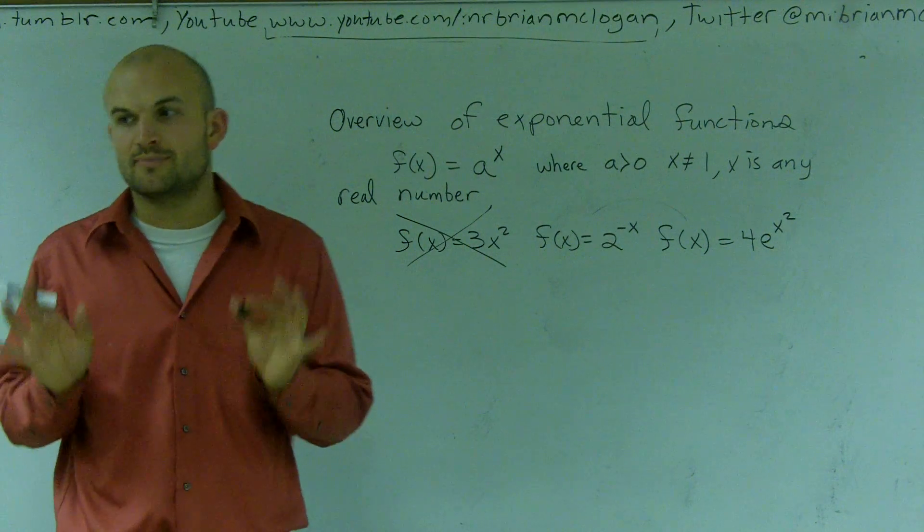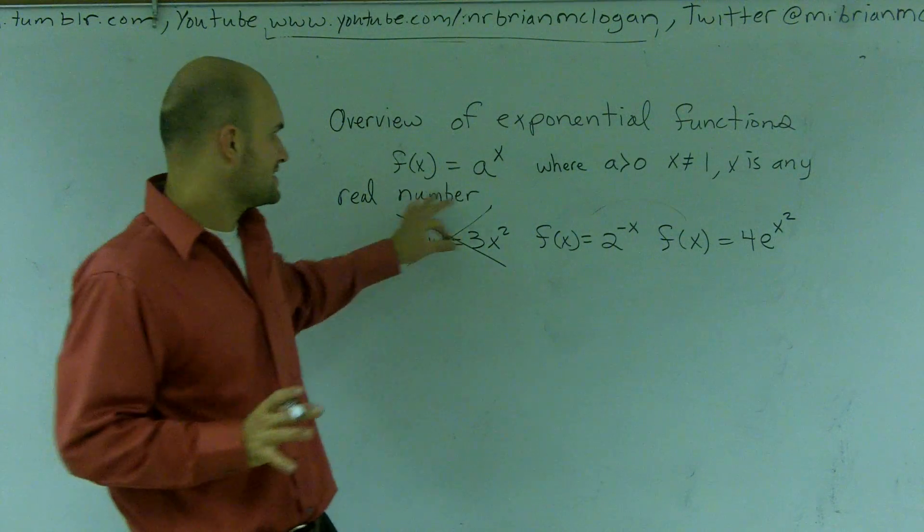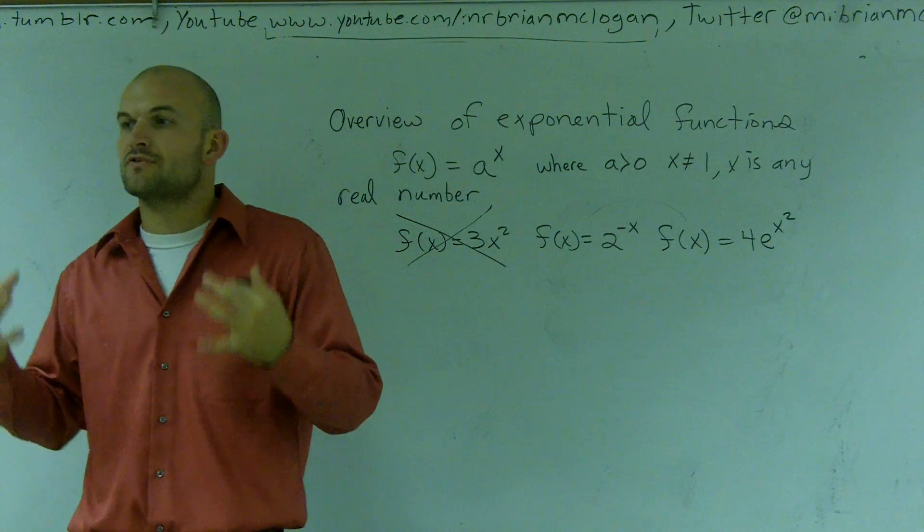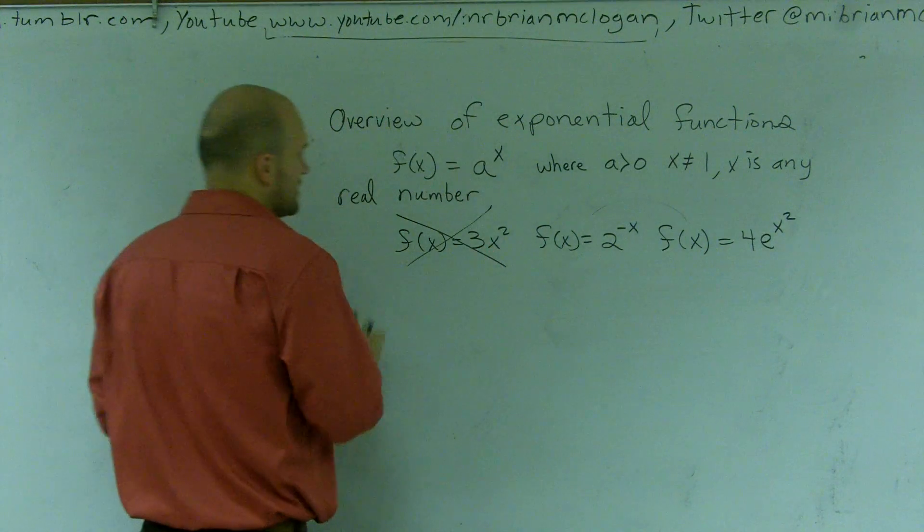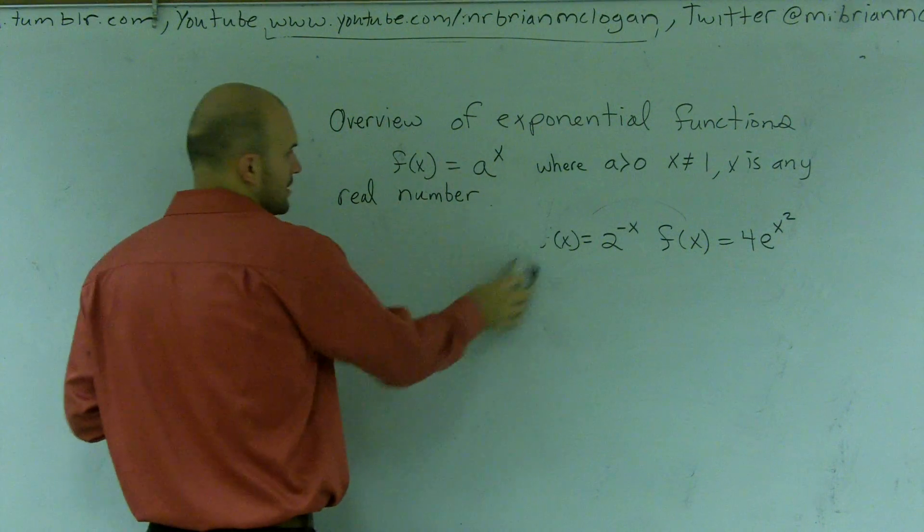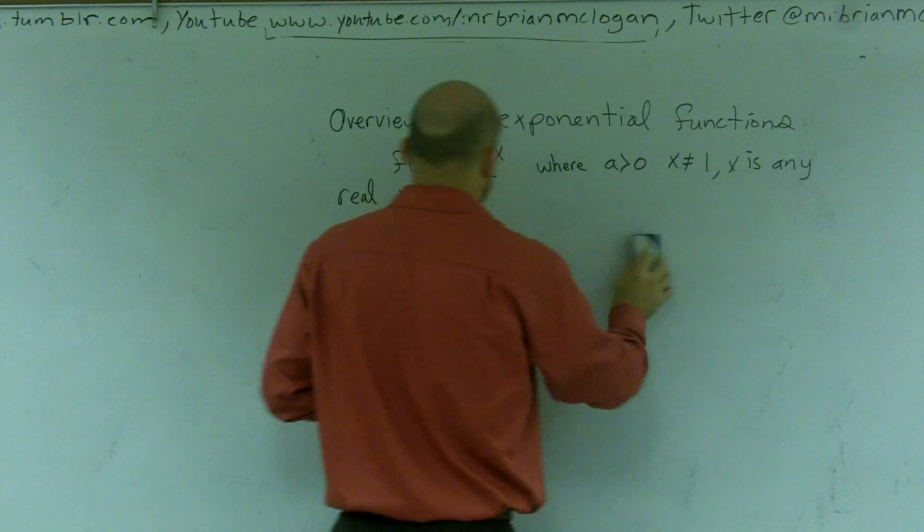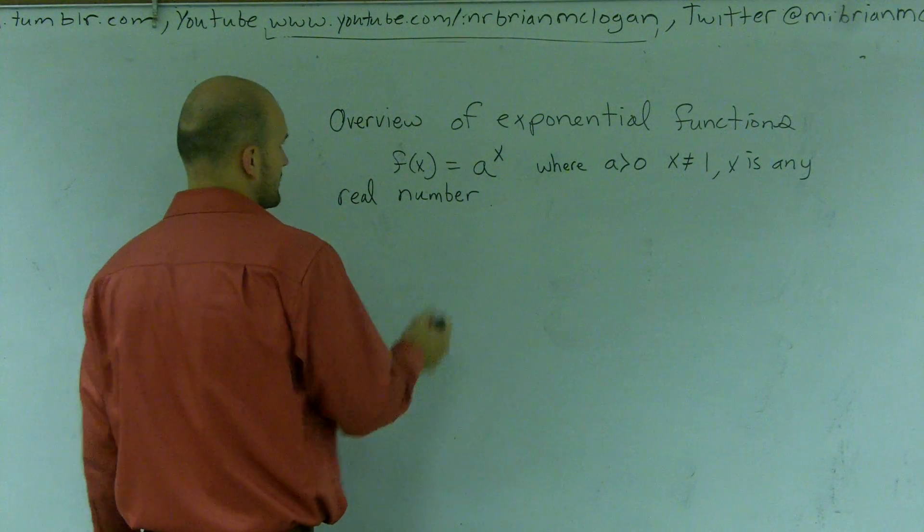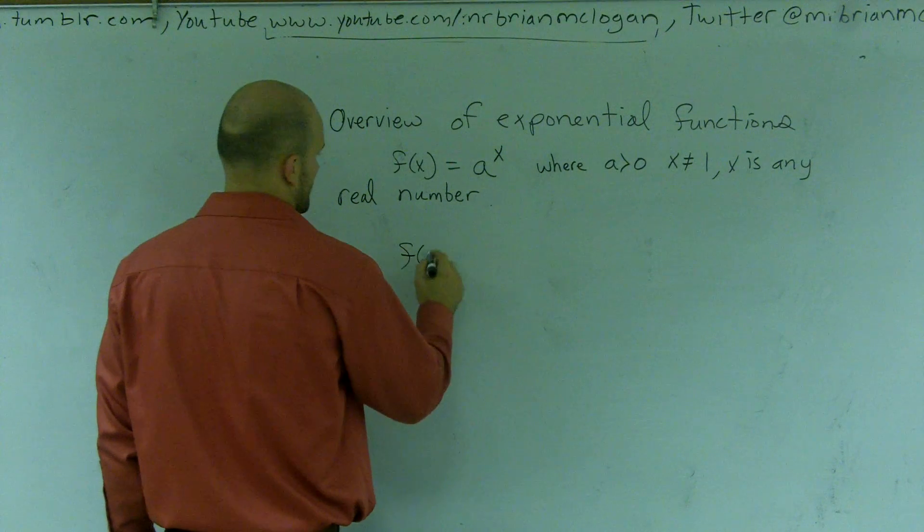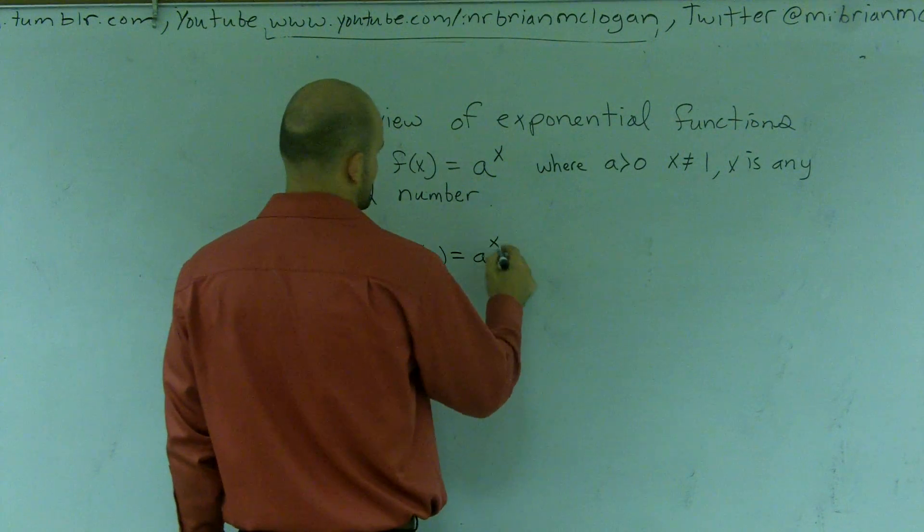So these two are both exponential equations. This one is not. So remember, exponential, the main important thing is, besides these little constraints, that you pretty much have your variable as your exponent. So let's go ahead and take a look at transformations with that. I'm given my f of x equals a to the x, right?